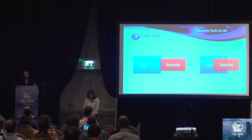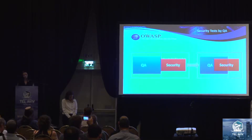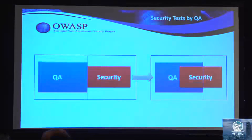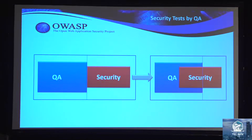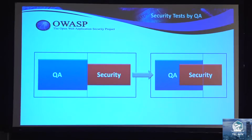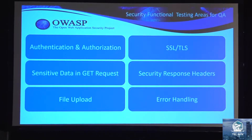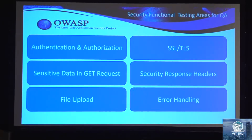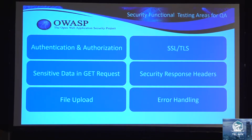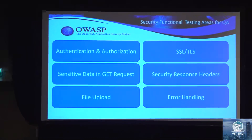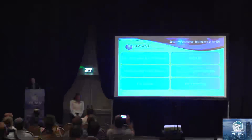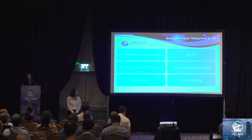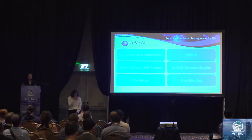The QA team already performs some security testing but they are not aware that this testing is also relevant for security. And because of that, application security is not aware that this test is already done. We want to increase the security coverage for the QA team and give visibility to the application security team. This is the list of security testing areas for QA: authentication and authorization such as session handling, password, weak password, direct access, sending sensitive data in GET requests, uploading huge files or files containing malicious code, SSL and TLS version and weak ciphers, security response headers such as XSS protection, click-jacking, and error handling.